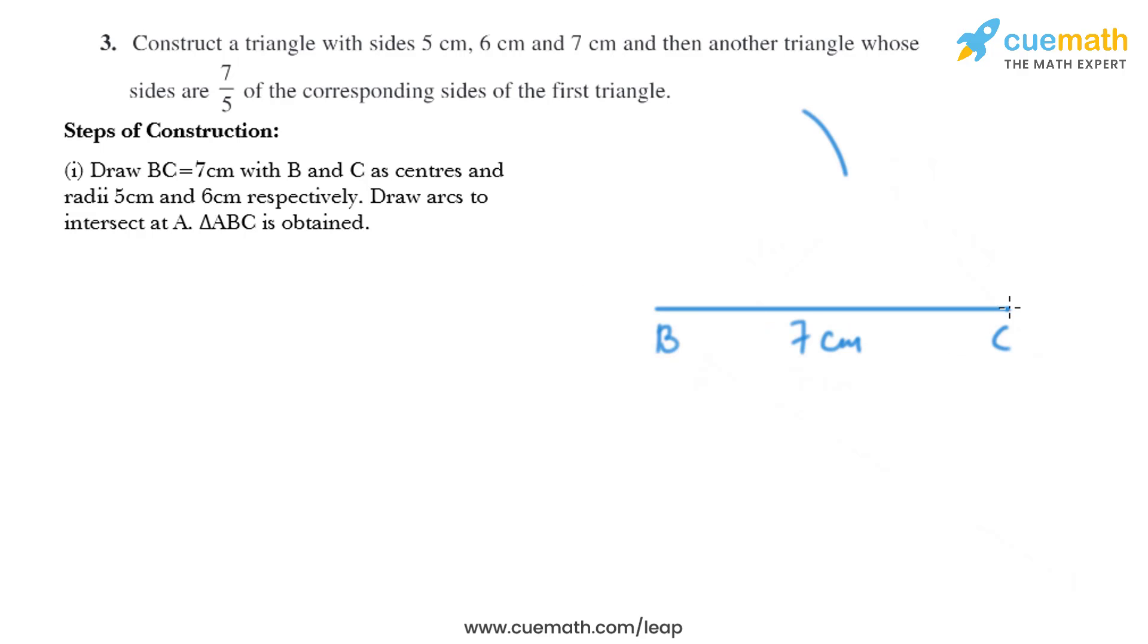We'll put the compass at C and measure the opening as 6 cm and draw another arc like this. We'll mark the point of intersection as A, then we need to join AB and AC. So we have got triangle ABC.